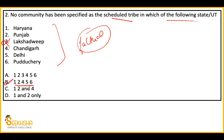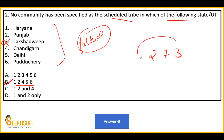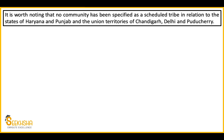The correct answer is Option B. That means Haryana and Punjab - 2 states - plus Chandigarh, Delhi, and Puducherry - 3 union territories - total 5. So the formula is 2 plus 3: 2 states (Haryana and Punjab) and 3 union territories (Chandigarh, Delhi, Puducherry) in which there are no specified Scheduled Tribes. Remember this.